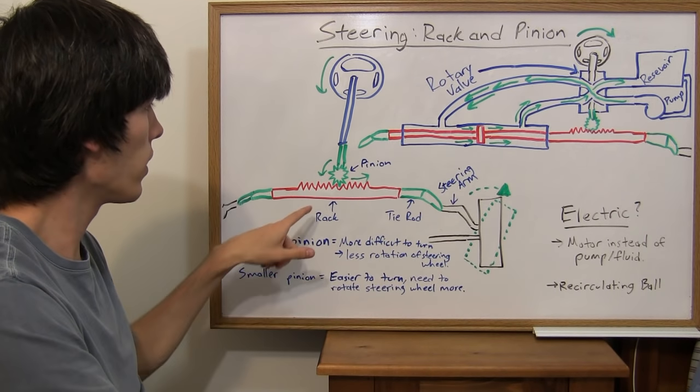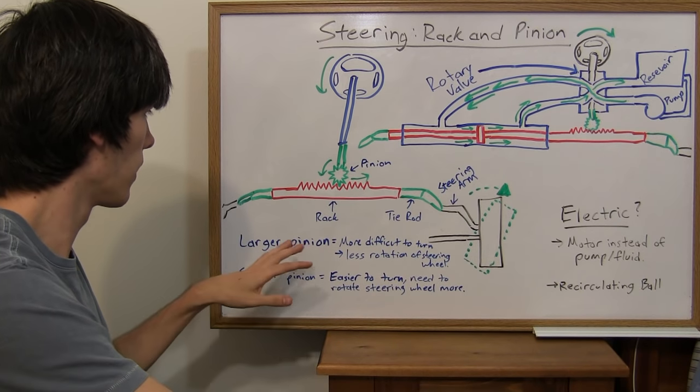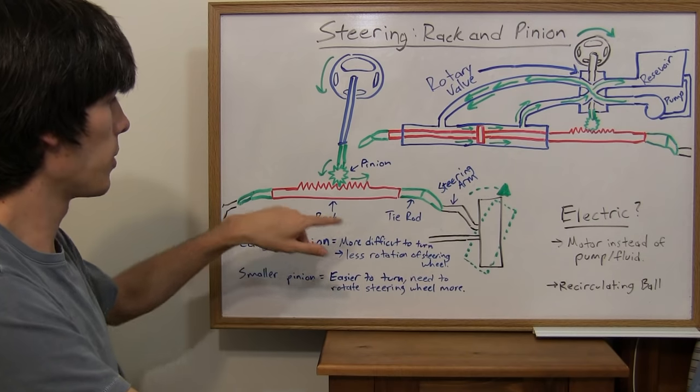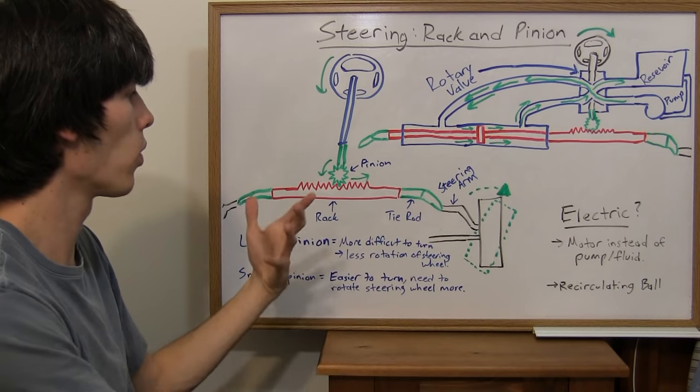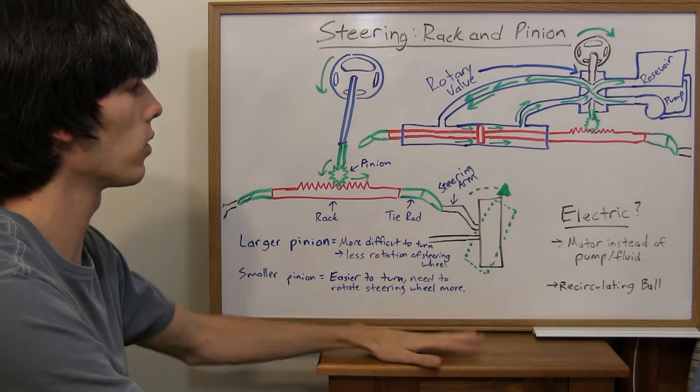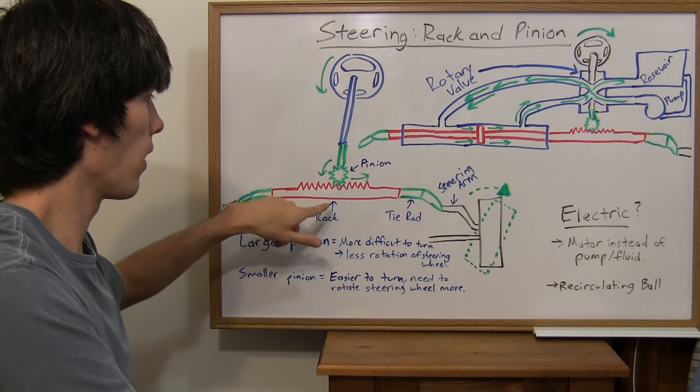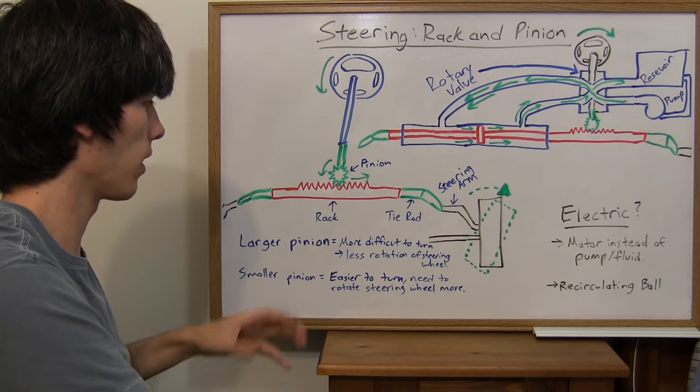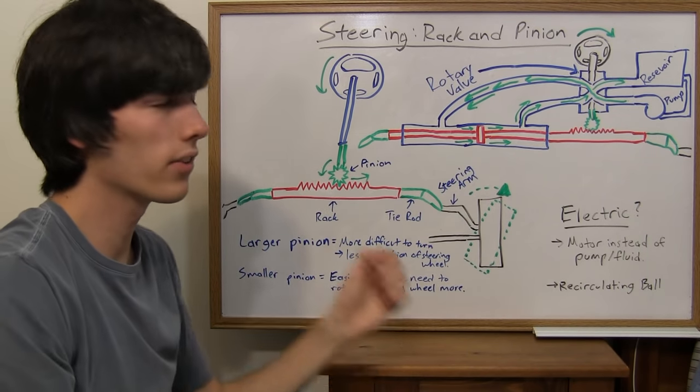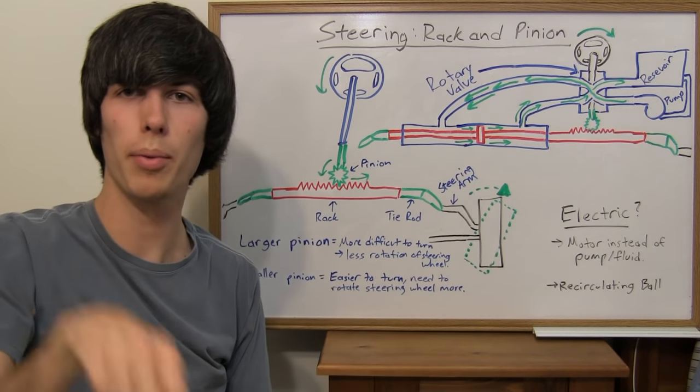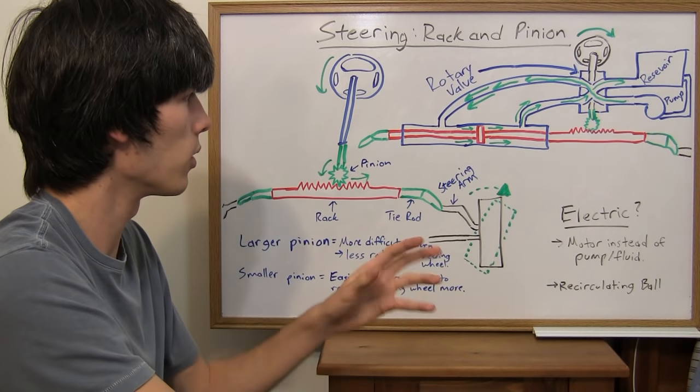So one thing to note is if you make this pinion larger or the rack smaller than the teeth on them, then it's going to be more difficult to turn because with less rotation you're going to get a lot more steering, more angle change of your tires. Now on the other hand, if you make this pinion smaller or the rack with much more teeth than the pinion, then it's going to be easier to turn, but the downside is you'll have to turn your wheel a bunch of times around just to go around a corner.